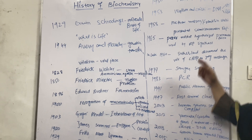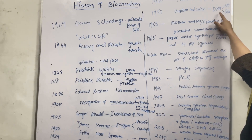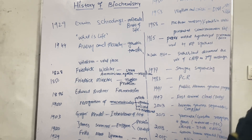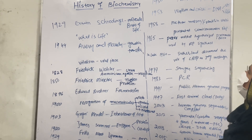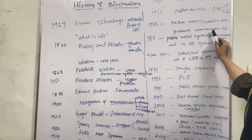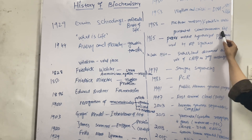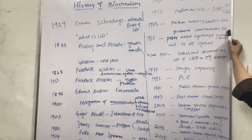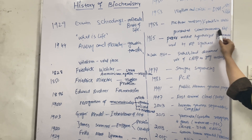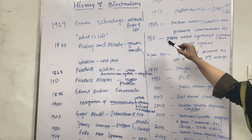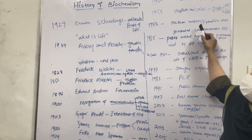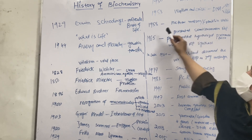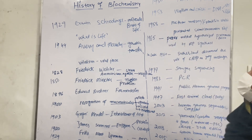In 1958, Meselson and Franklin Stahl presented semi-conservative replication — showing that DNA replication is the copy formation of DNA from parent DNA. The offspring DNA has some characters of their parents and some new characters. This type of replication is called semi-conservative replication, first presented by Meselson, Stahl, and Franklin in 1958.